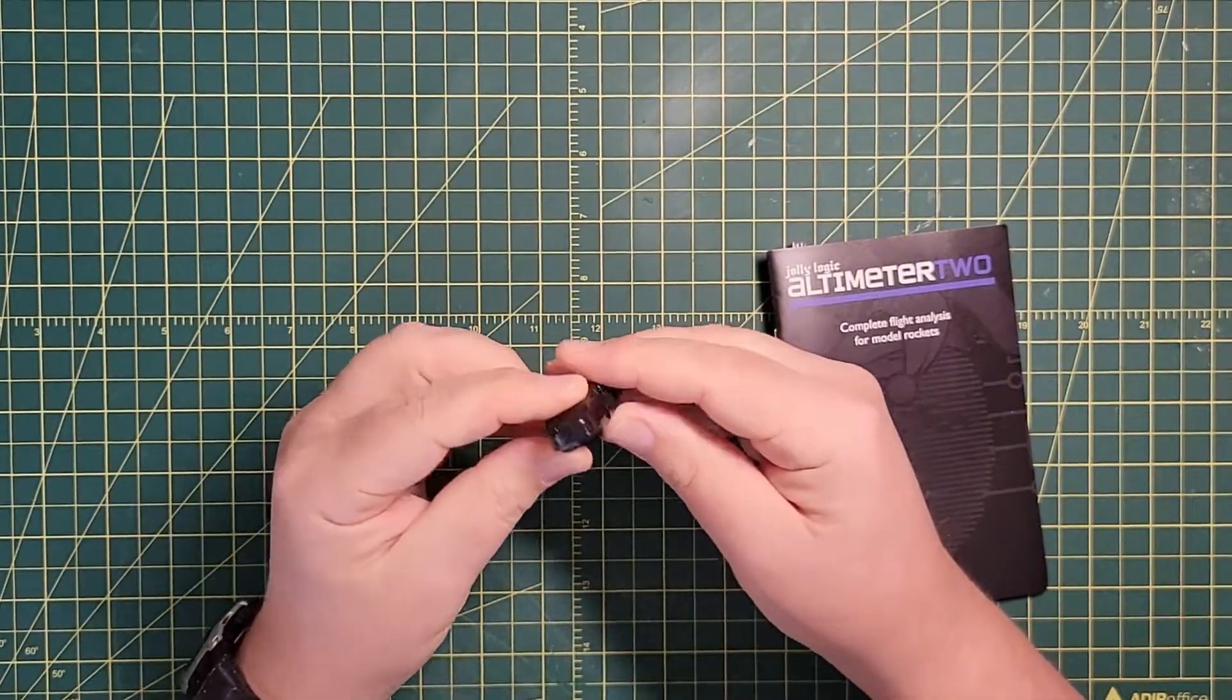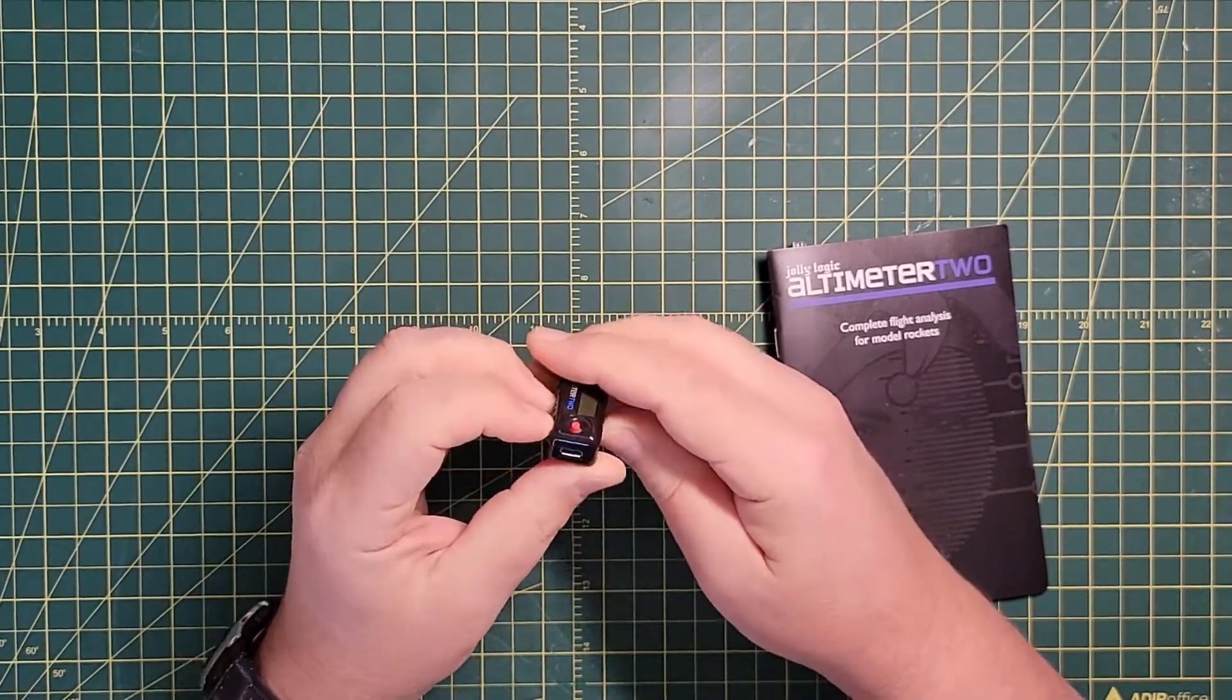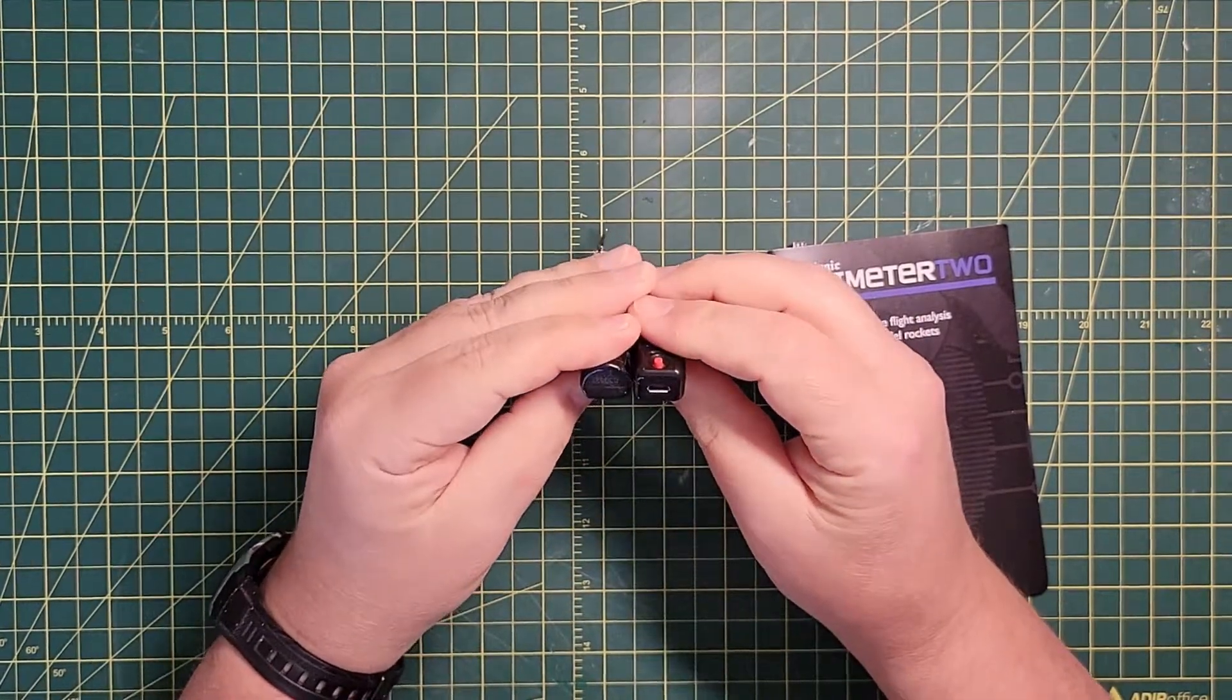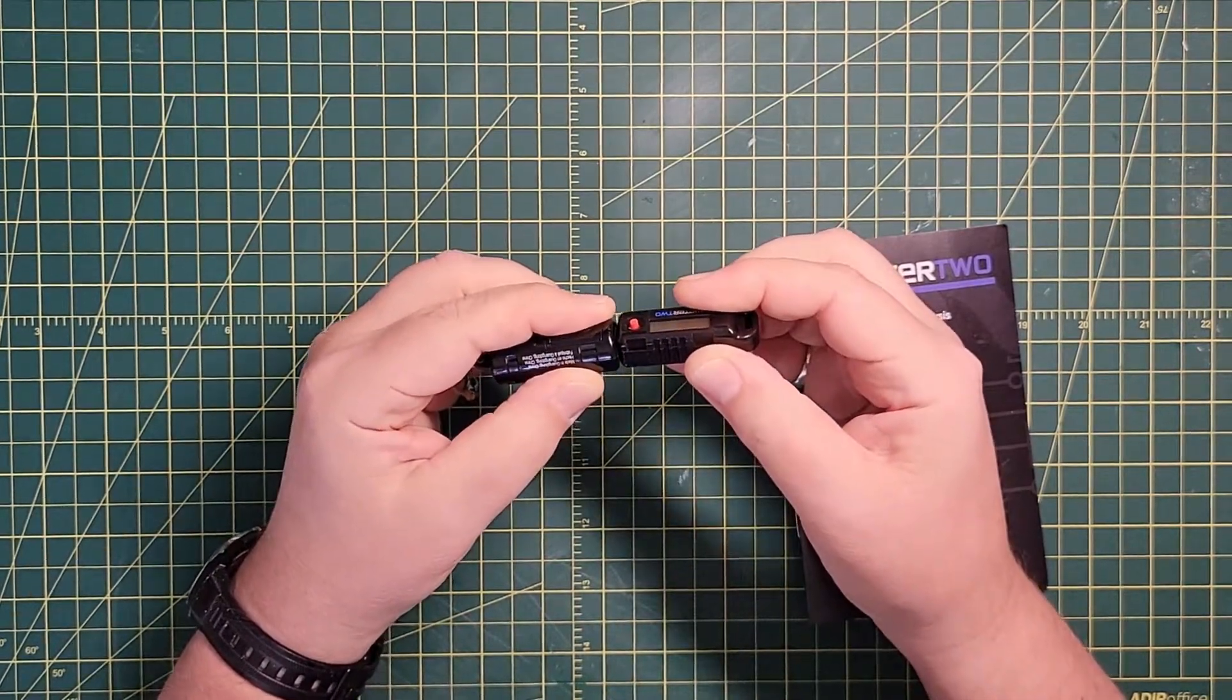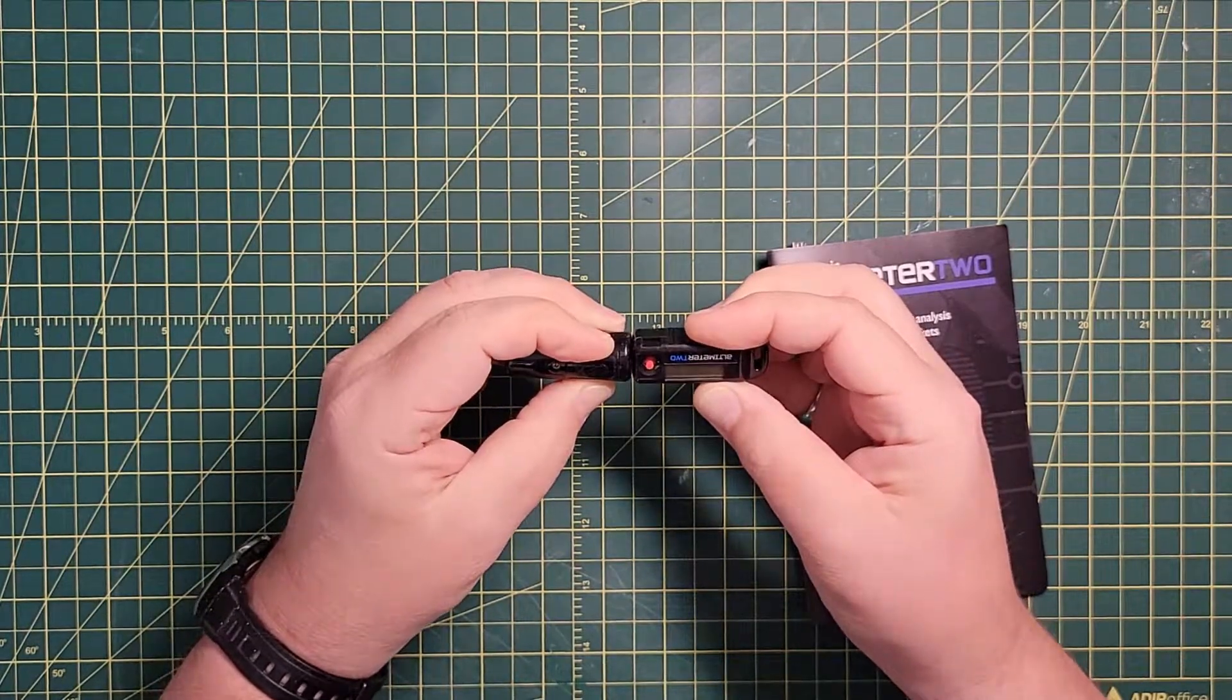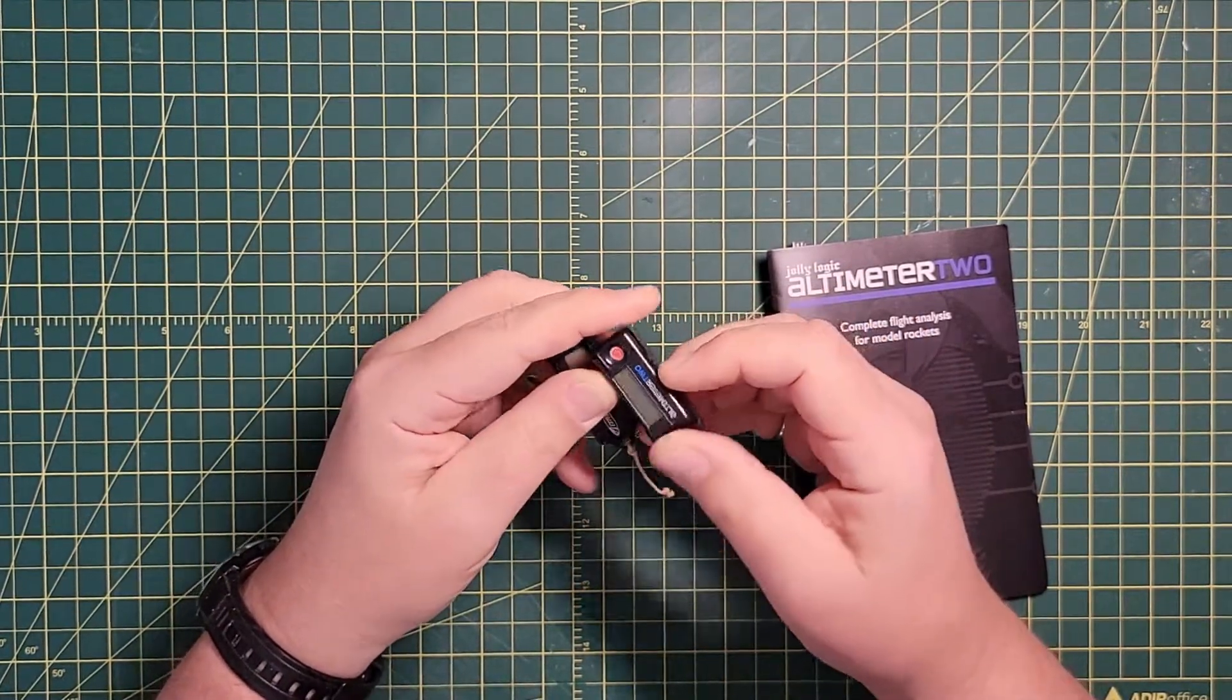So physically looking at the altimeter, it's rectangular, it's a little bit larger. Let me compare it to the Estes altimeter. So they're approximately the same size, although the Estes altimeter is a little bit thicker here. But it does have rounded edges on it.